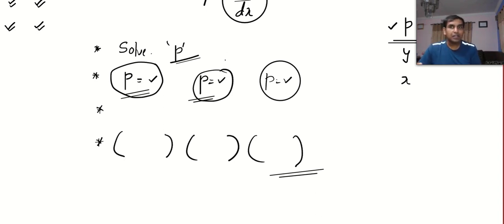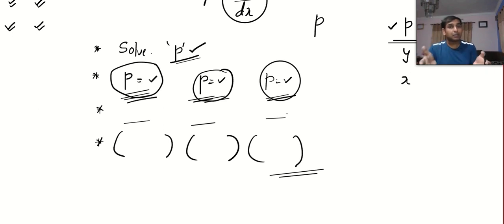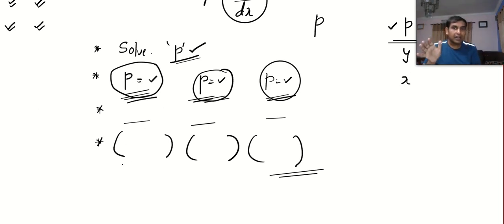One last time I will repeat. First, we will solve for P and find the value of P. Second, equate each value of P separately and use the idea that P is dy by dx. Each equation may be variable separable, homogeneous, linear, or Bernoulli. Solve each of the equations, and at the last, make the individual product equal to zero — that will be the general solution.